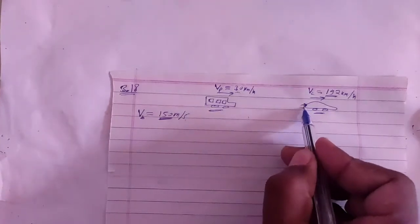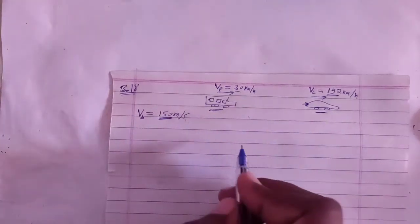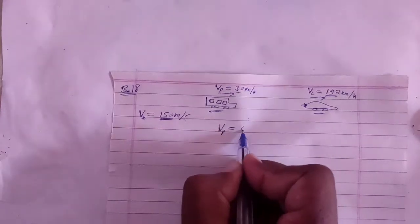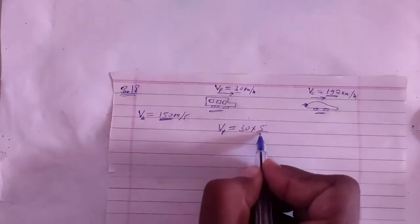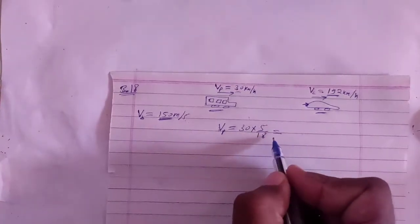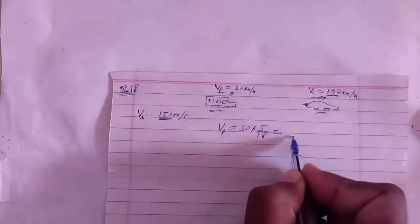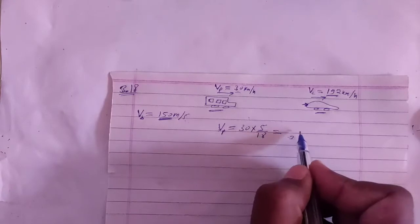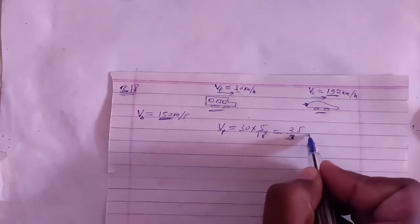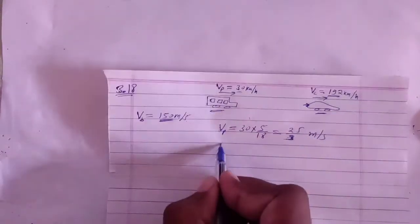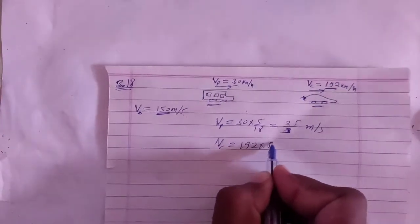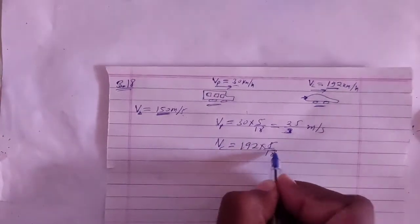The velocity of the police is 30 km per hour. Converting to meter per second: 30 divided by 18 multiplied by 5 gives 25 by 3 meter per second. Speed of police is 25/3 m/s. Speed of thief: 192 km per hour, converted by multiplying 5 and dividing by 18, gives 160 by 3 meter per second.